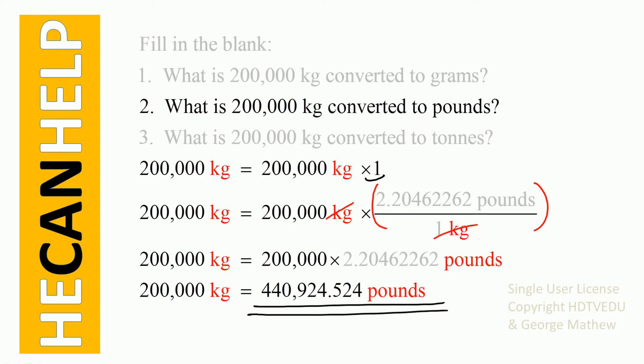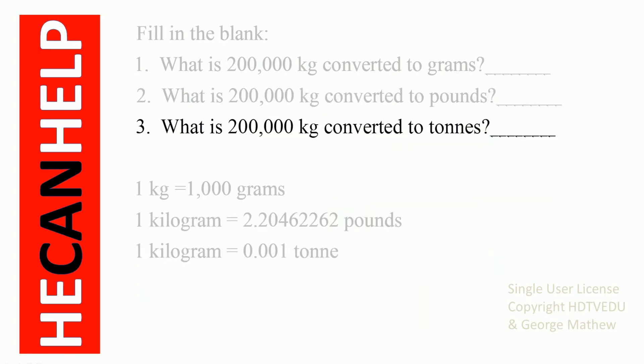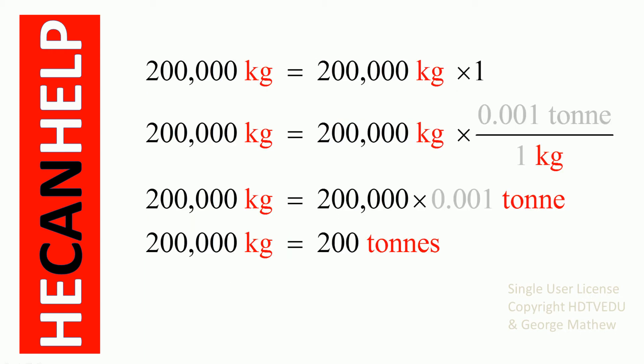The last one: what is 200,000 kg converted to tons? What is 1 kg equal to in tons? 0.001. So again we start with 200,000 kg and multiply by 1. We replace 1 with 0.001 ton over 1 kg, because 1 kg is equal to 0.001 ton.